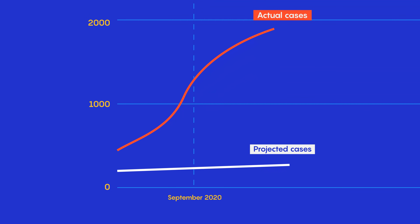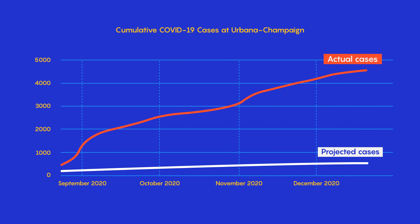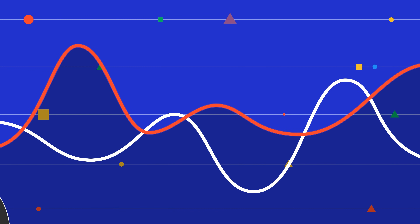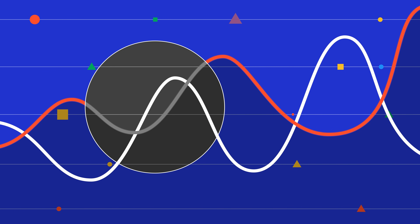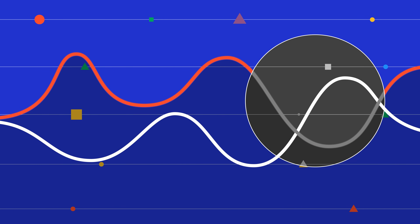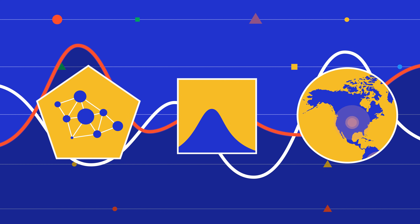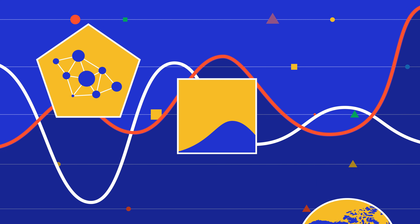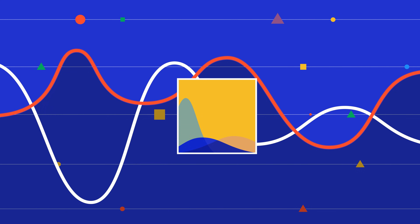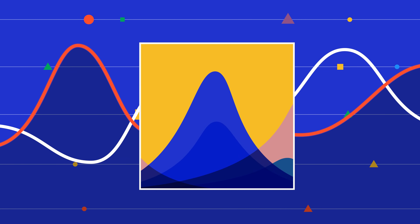Why does it seem like COVID-19 models are getting it so wrong? In reality, there's a lot more going on here. In order to understand how models can be useful, we first have to understand how they're built, what they can and can't tell us, and how all of this often gets lost in translation.